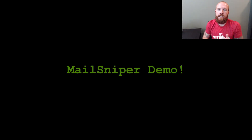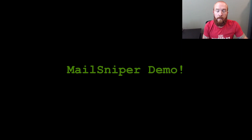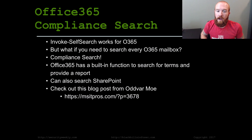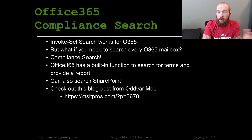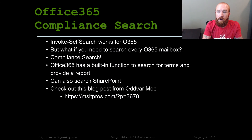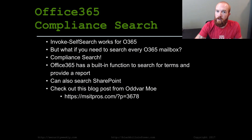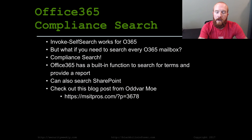When it comes to Office 365, you have InvokeSelfSearch that you can use to search the current user's mailbox. Currently, the global mail search module doesn't work against O365, but there is another way. Oddvar Moe actually posted a really awesome blog post when I released MailSniper, detailing the compliance search functionality of Office 365. There's basically a built-in function to do exactly what this does — it searches for terms and provides a report. You can also search SharePoint through Office 365 compliance search. You do need a global admin of Office 365 to do this.